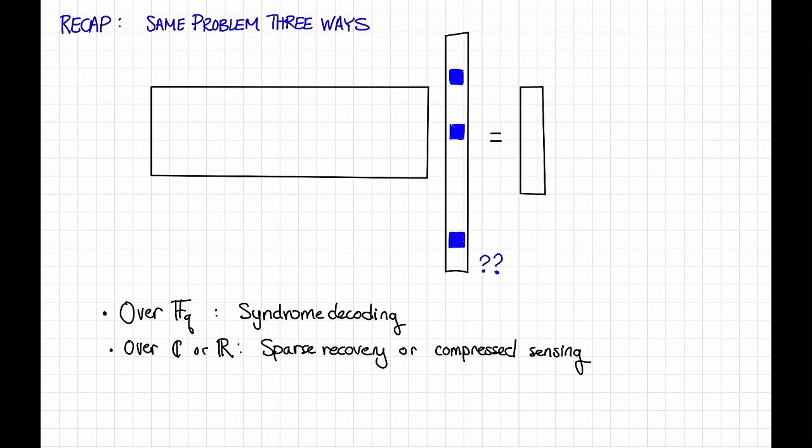Over a Boolean algebra, this is called group testing, and it's useful for testing a large population for a rare trait.